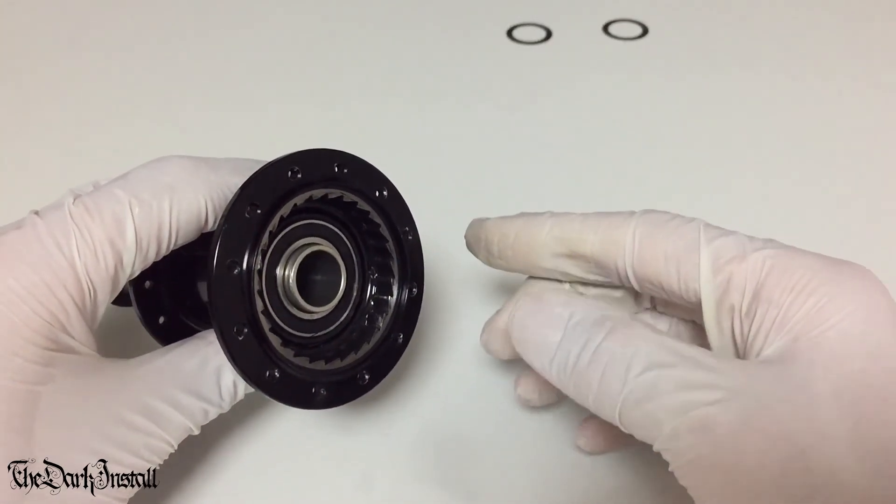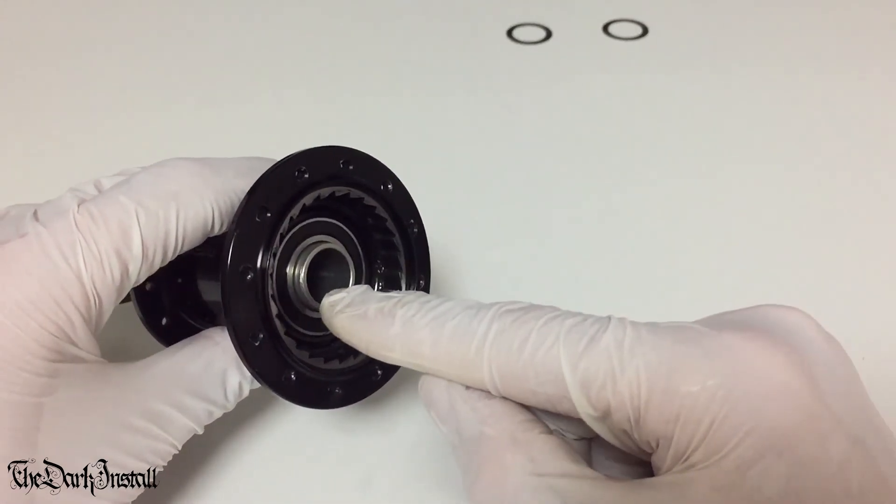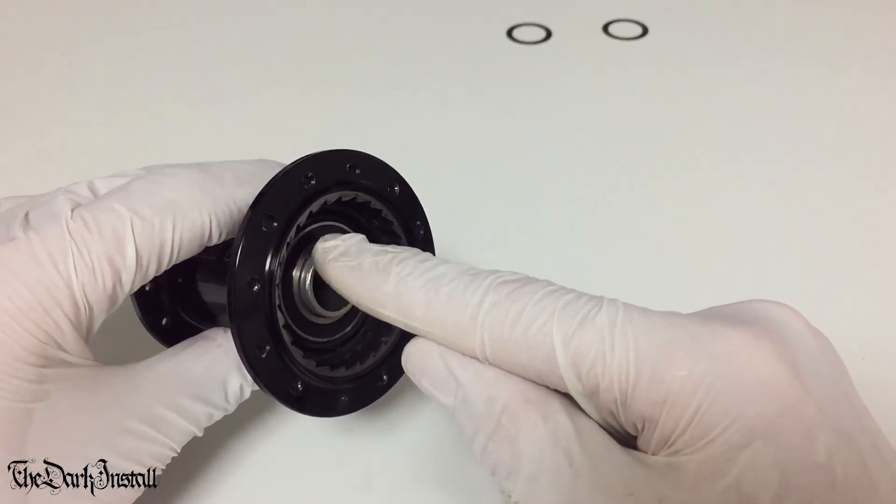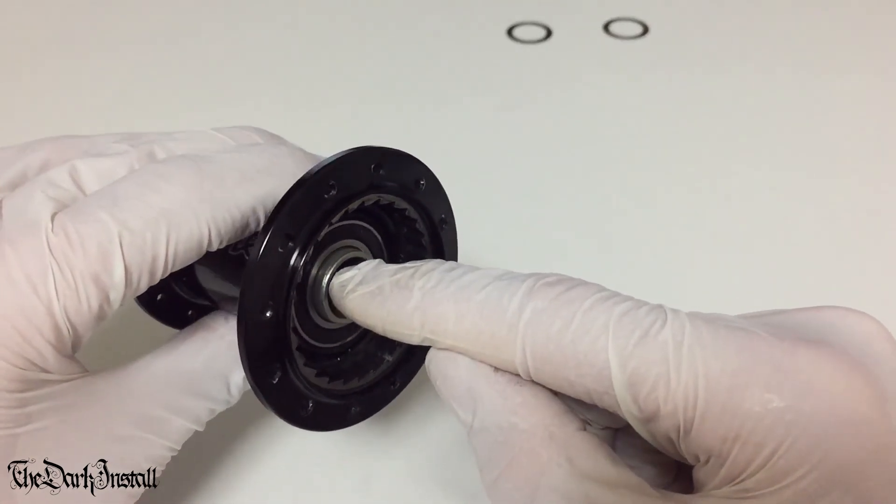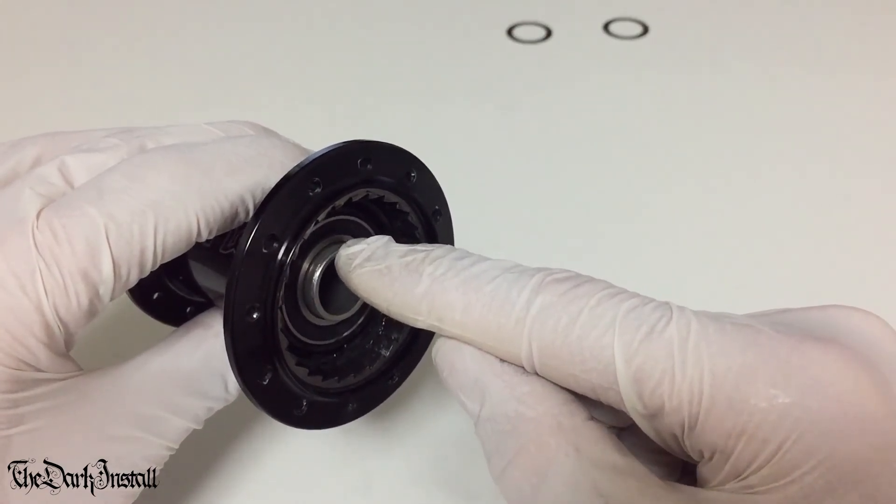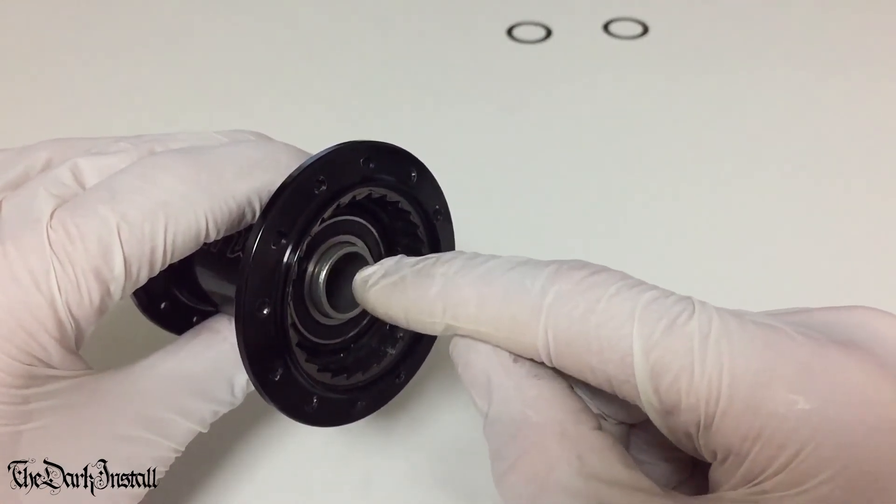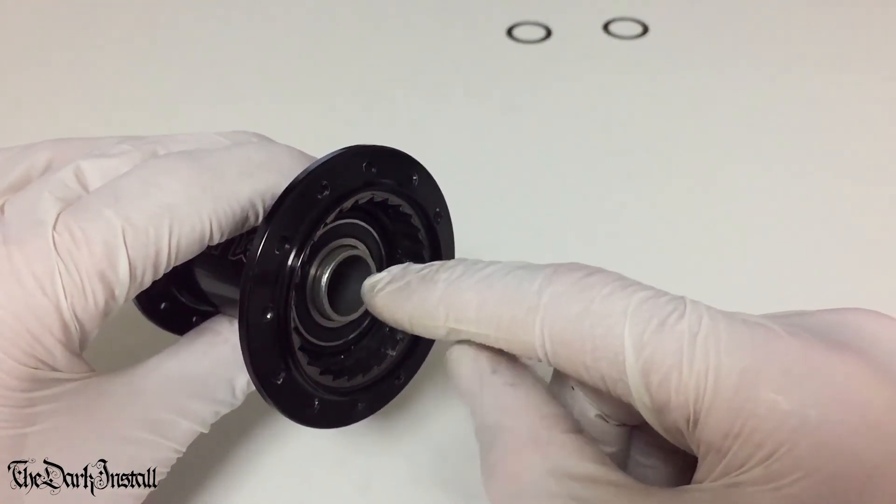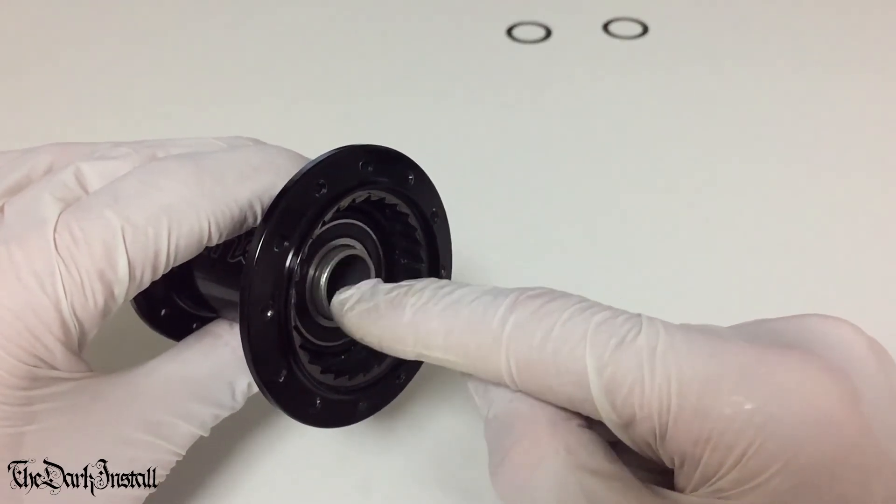Time for reassembly then. To reassemble, you need the axle to be sitting about there. So that's three or four mil out. Don't have it any further in and don't have it sticking an inch out. It needs to be about there.